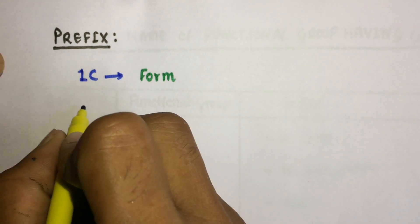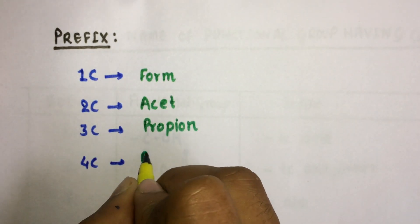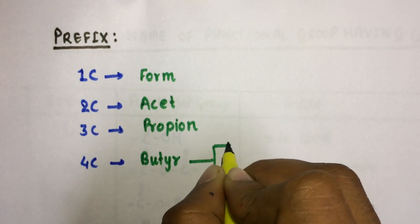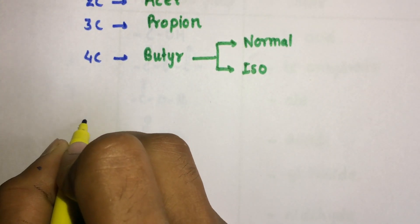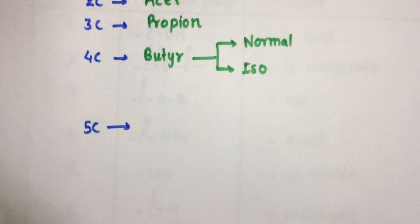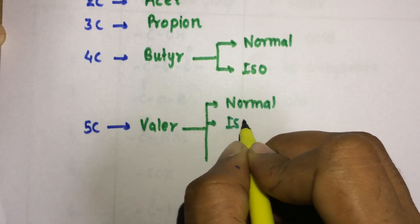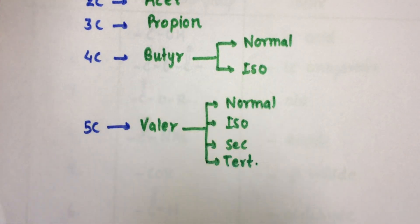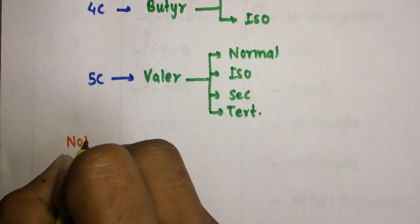Moving to prefixes: if the number of carbons in the carbon chain is one, it is termed 'form'; if two, 'acet'; if three, 'propion'; if four, 'butyr' (which may be normal or iso); if five, 'valer' (which may be normal, iso, secondary, tertiary, or neo).